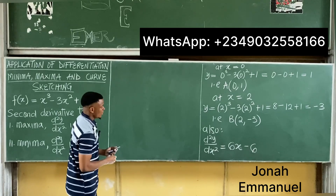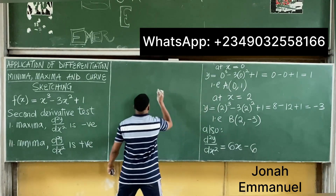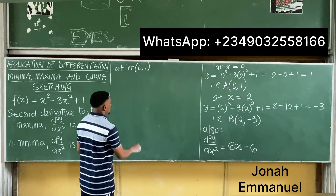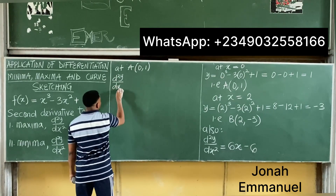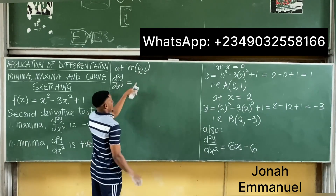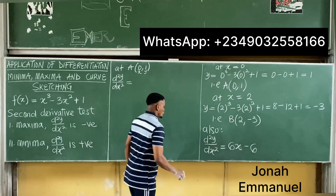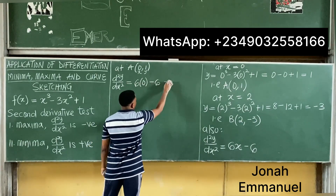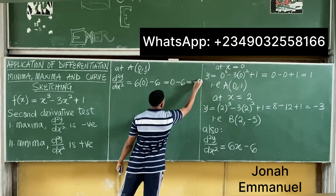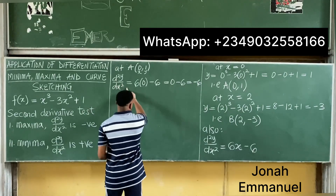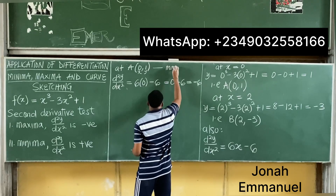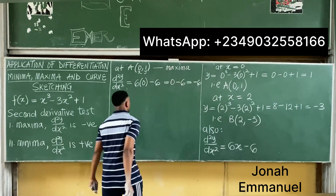From this, let's use point A where x is 0 and y is 1. d²y/dx² equals 6 times 0 minus 6, which is 0 minus 6, equal to minus 6. Since d²y/dx² is negative, that means this point is a maxima.